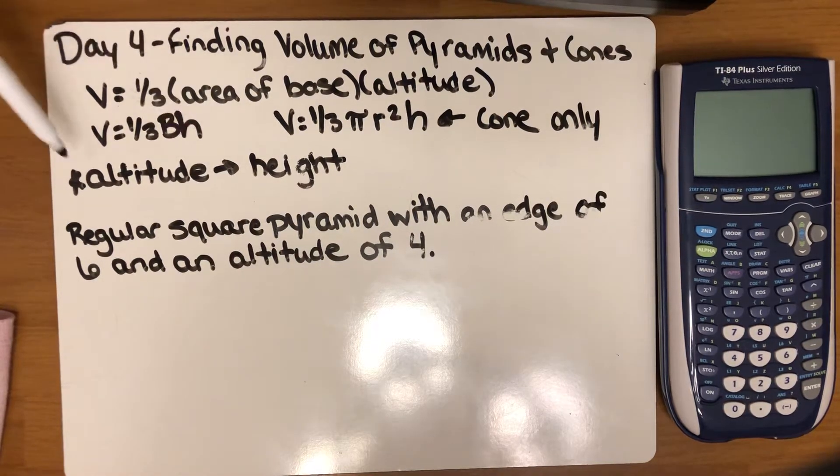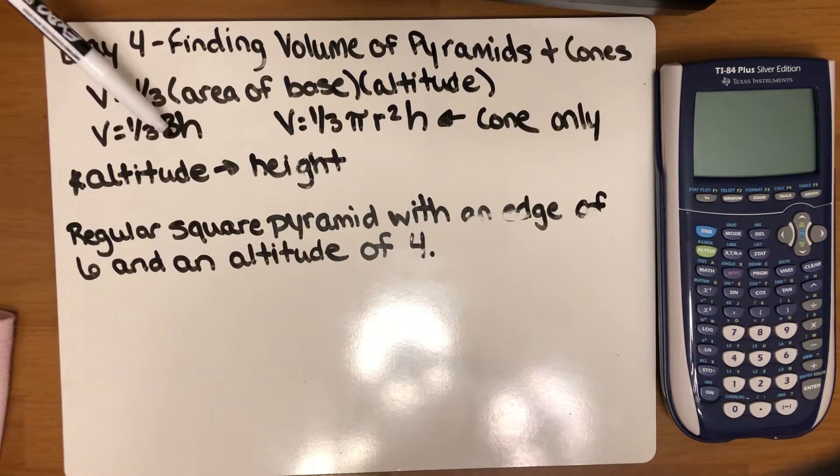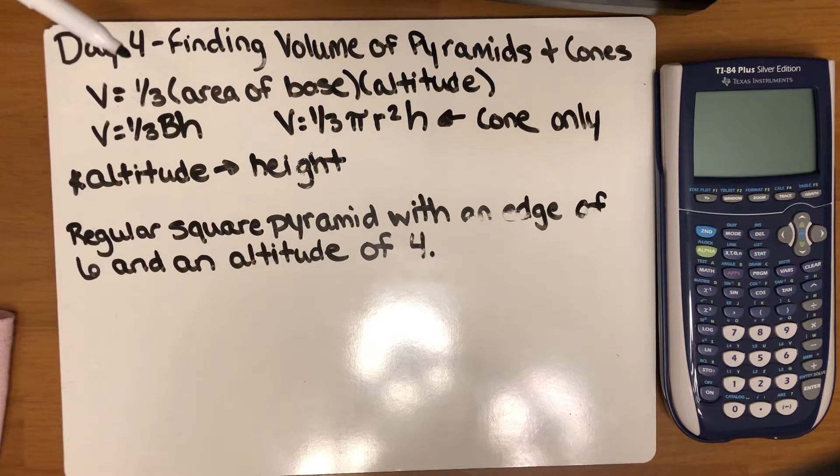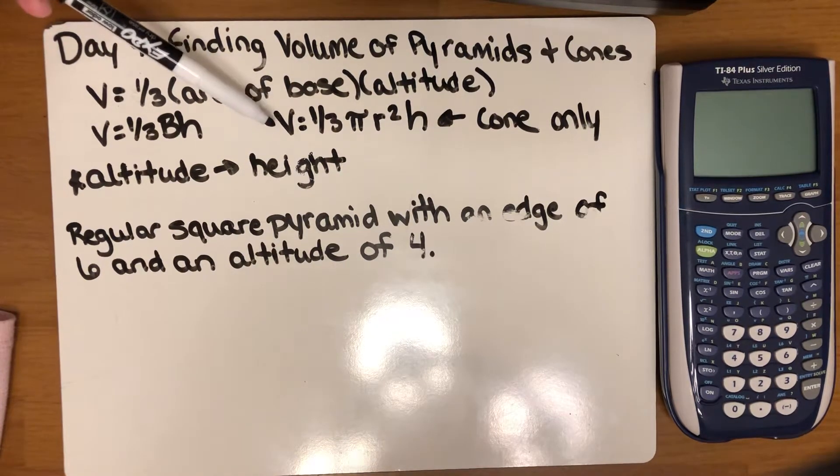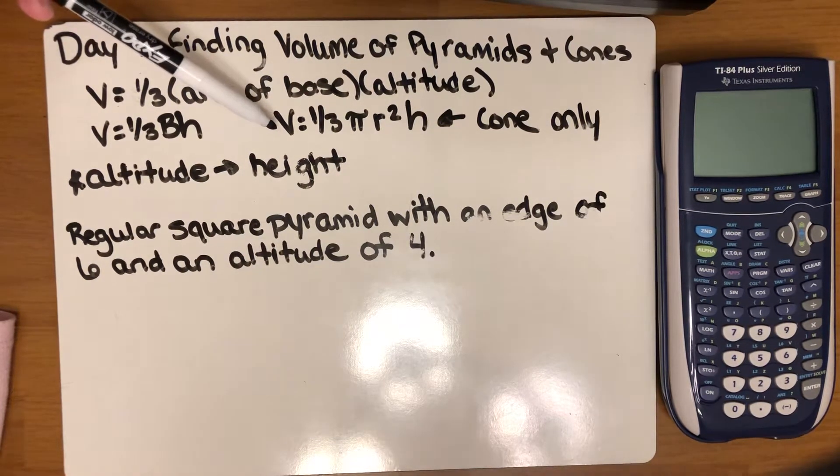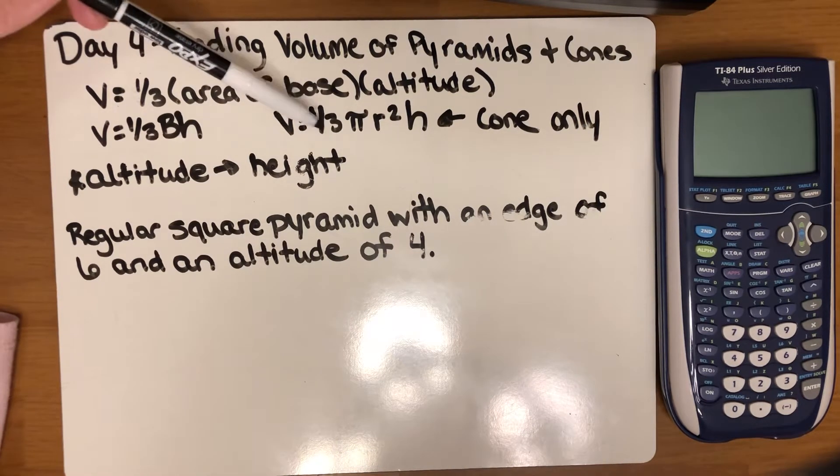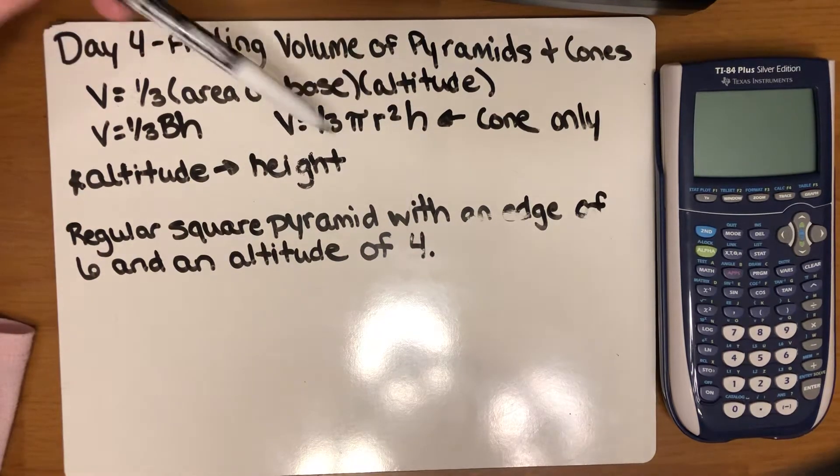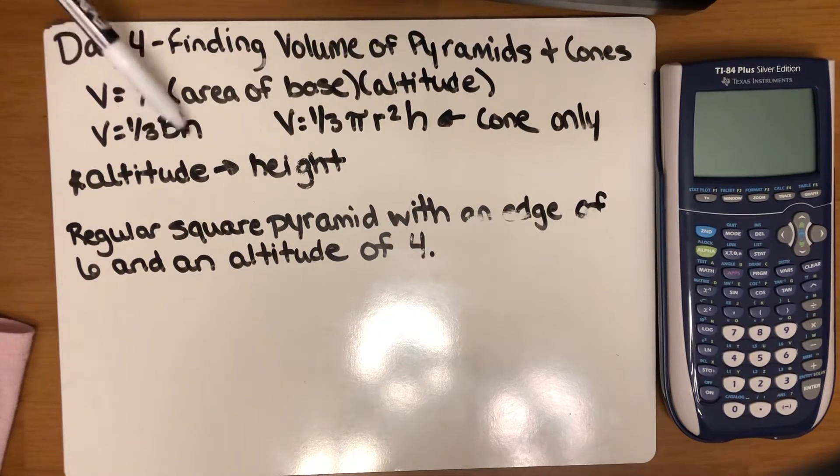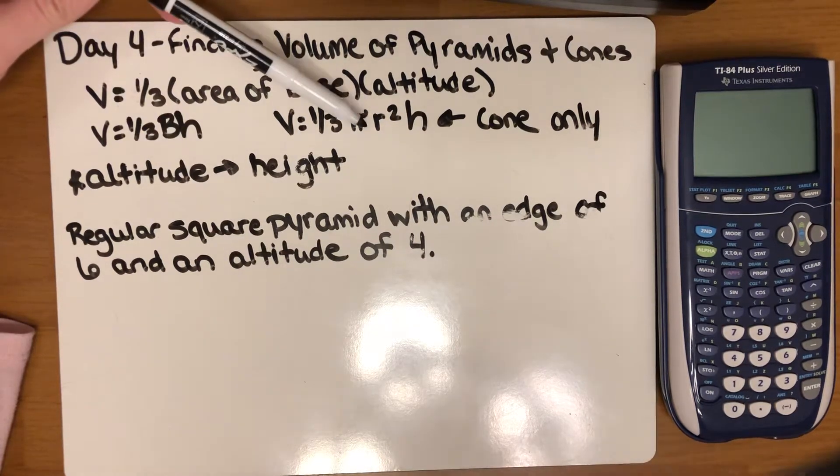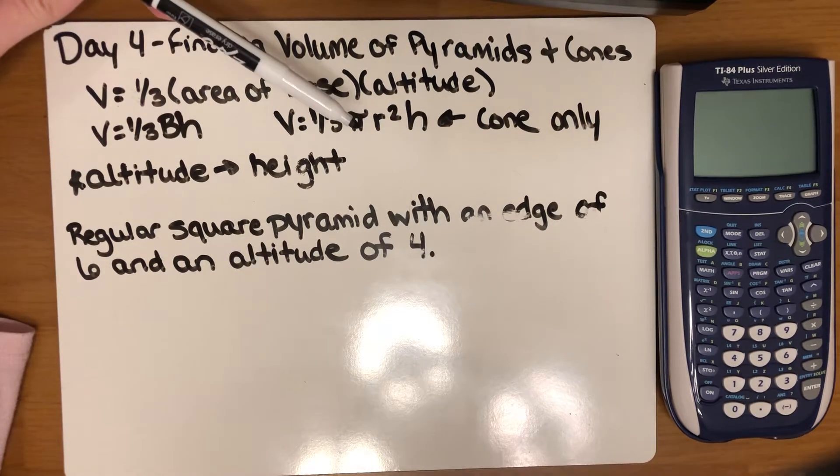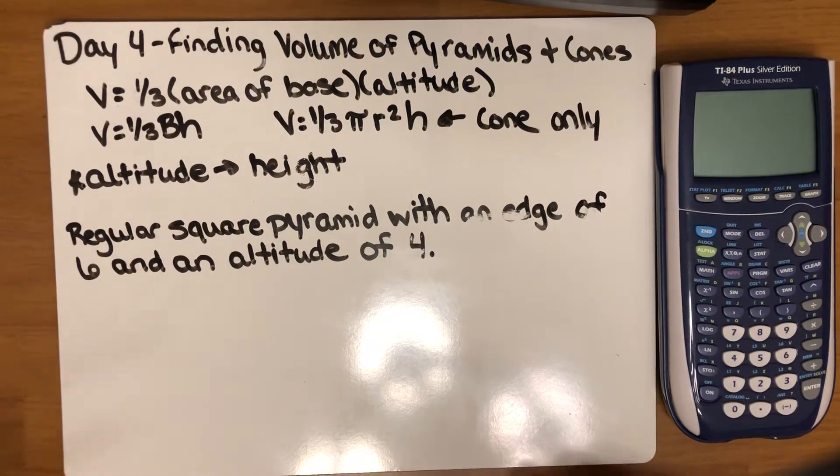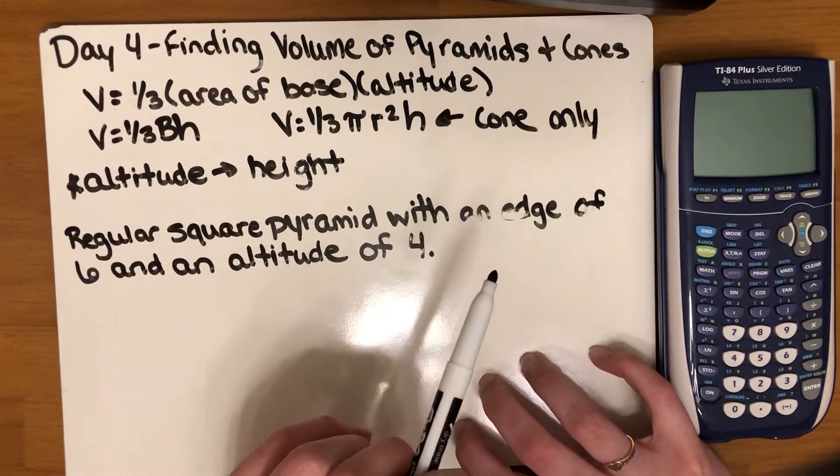This general formula of one-third times area of the base times the height is used for anything that has that cone or pyramid shape. However, I will go ahead and give you the formula for a cone specifically. That is one-third pi times the radius squared times the height. The only difference is they've replaced the area of the base with the formula for the area of the circular base, pi r squared. Keep in mind this formula just works for cones only.